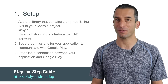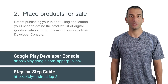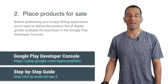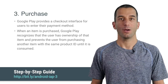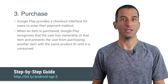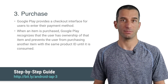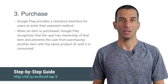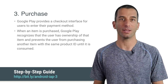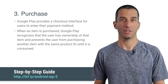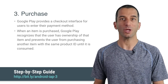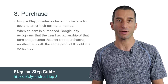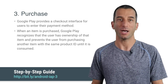Now you can place products for sale. Before publishing your application, you'll need to define the product list of digital goods available for purchase in the Google Play Developer Console. Once your application is connected to Google Play, you can initiate purchase requests for in-app products. Google Play provides a checkout interface for users to enter the payment method, so your application does not need to handle payment transactions directly. When an item is purchased, Google Play recognizes that the user has ownership of the item and prevents them from purchasing another item with the same product ID until it is consumed.